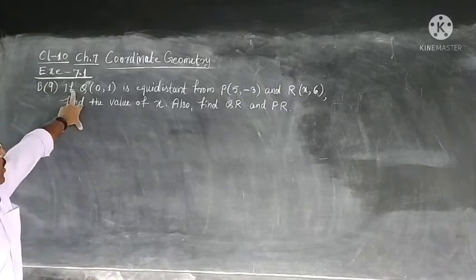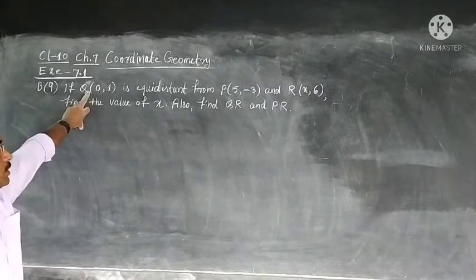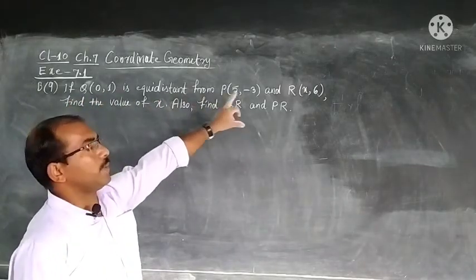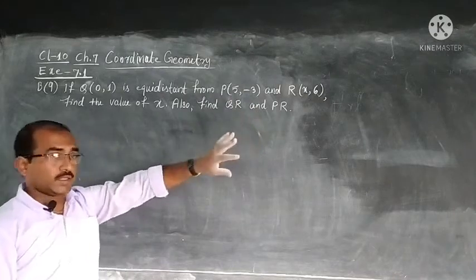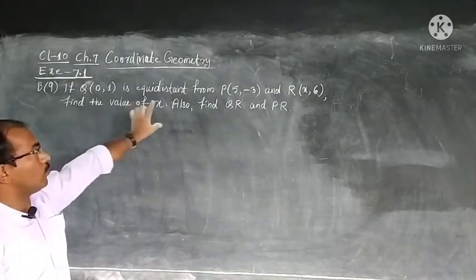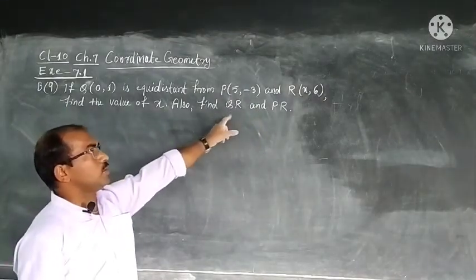Question is if Q(0,1) is equidistant from P(5,-3) and R(x,6), find the value of x also find QR and PR.